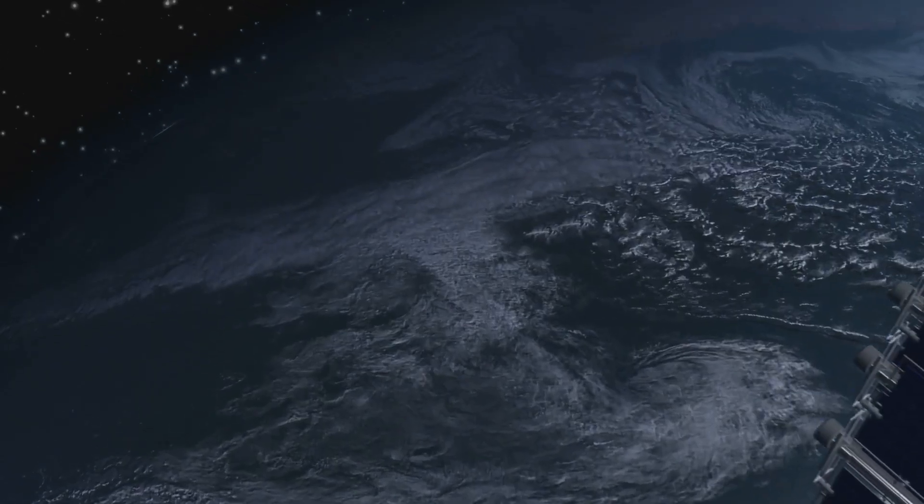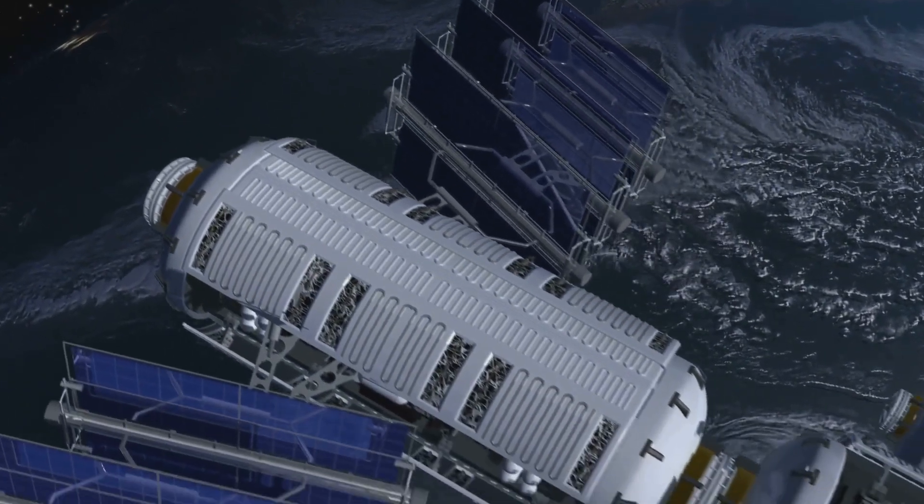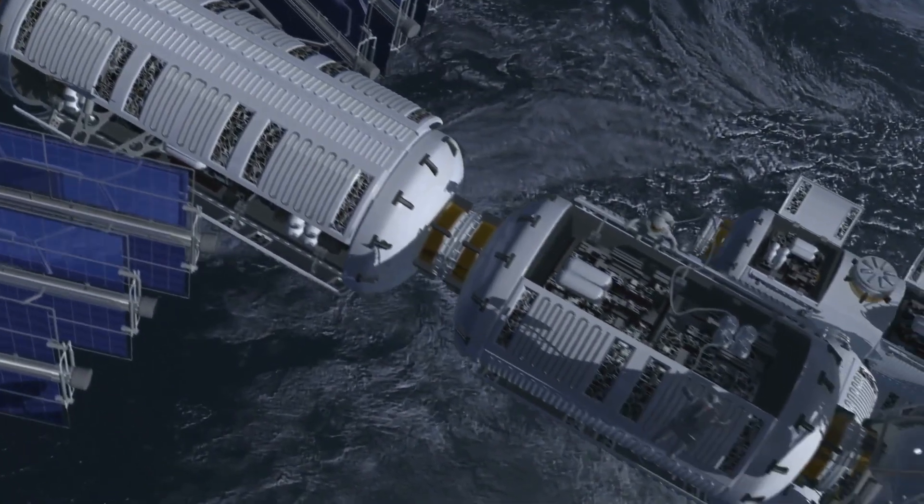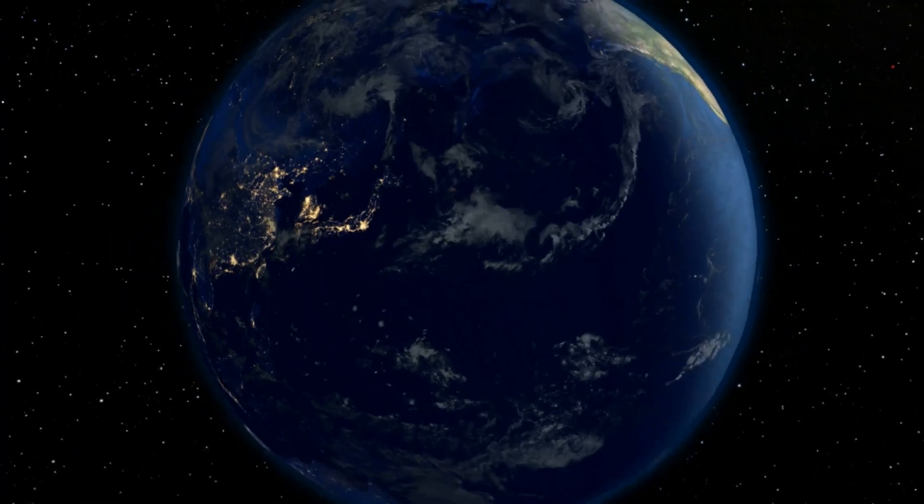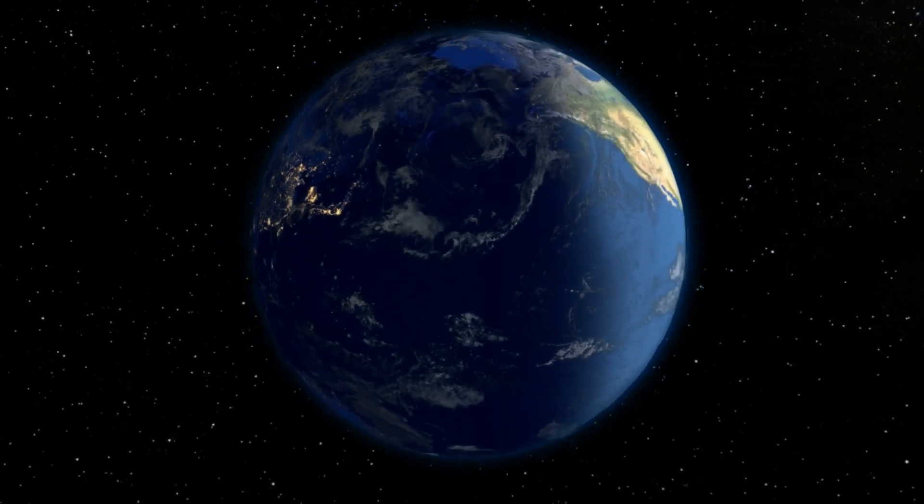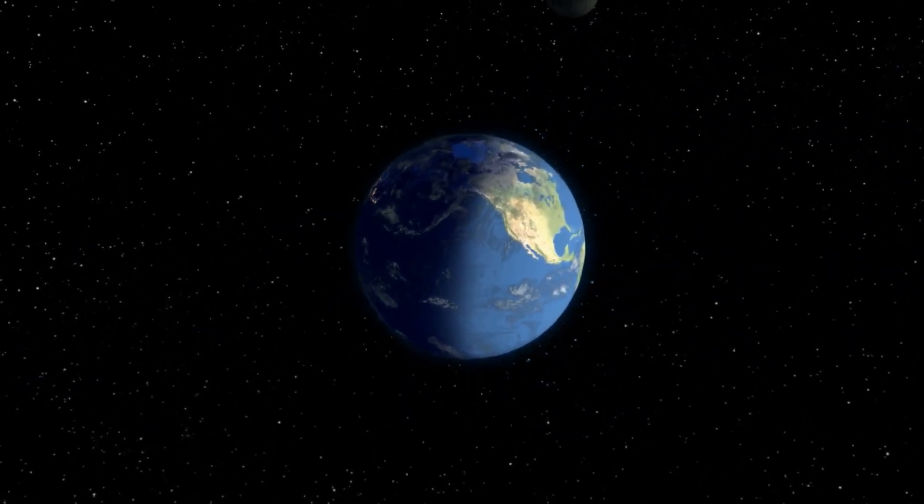Fascinating, right? So, in a nutshell, Earth's atmosphere stays put due to a delicate balance of gravity, molecular speed, and atmospheric density, with a little help from our planet's not-too-hot temperature. While some particles do escape, the majority of our atmosphere remains stable, protecting us from the harsh realities of space.